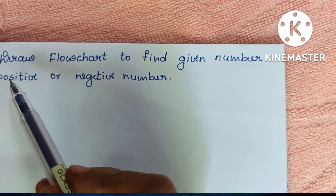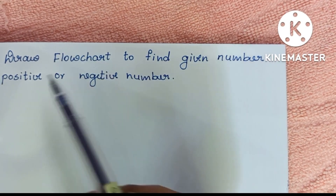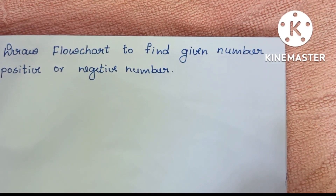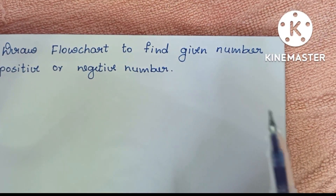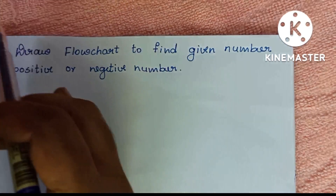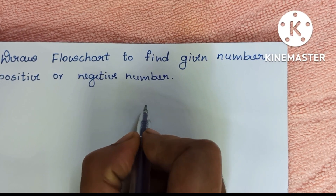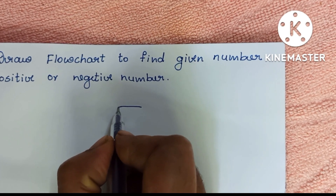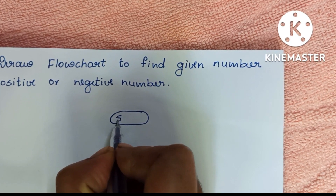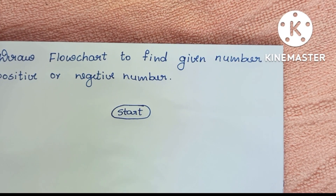In this video we are going to learn how to draw a flowchart to find whether a given number is positive or negative. A flowchart is a graphical representation of a solved problem. A flowchart always starts with a start statement, which is written within an oval shape. So we have to draw an oval shape and write the start statement inside it.